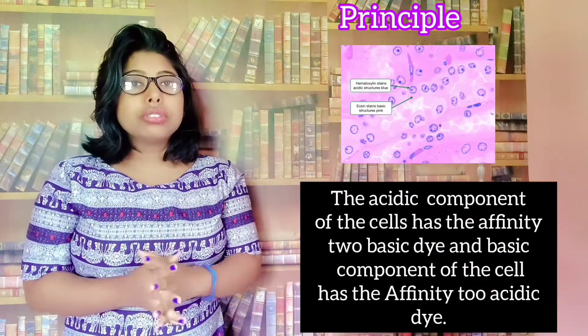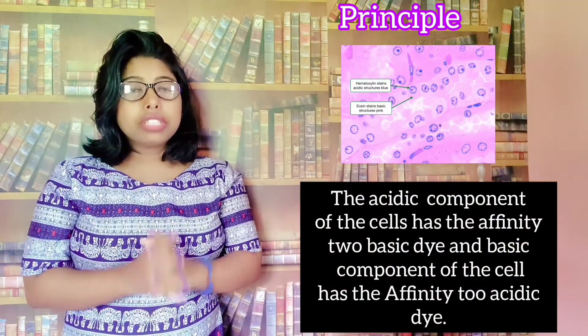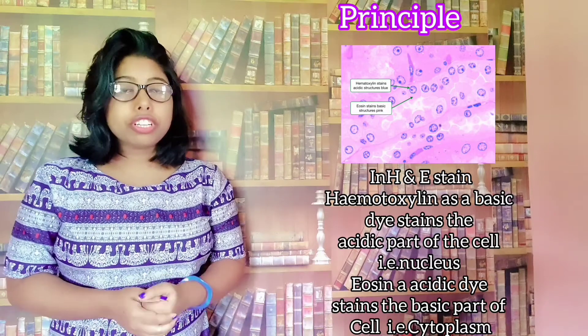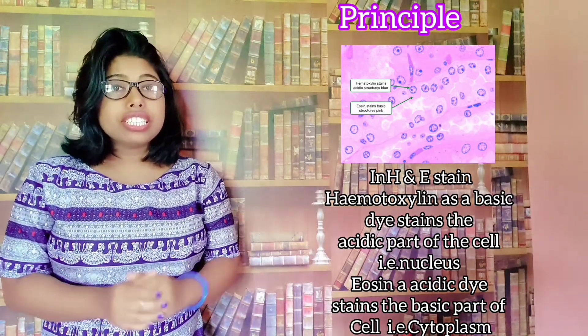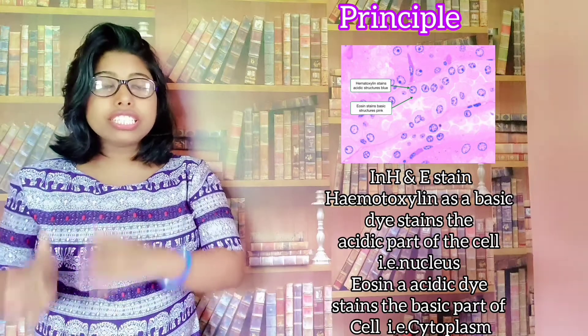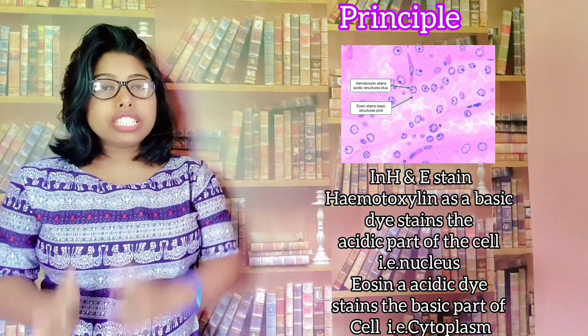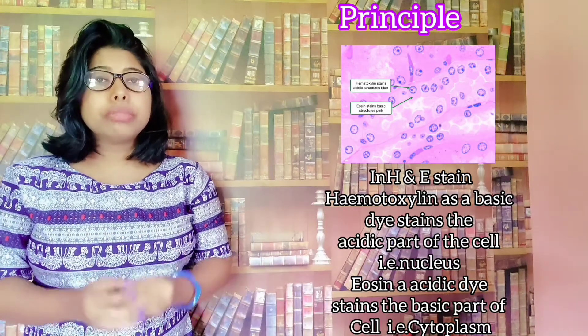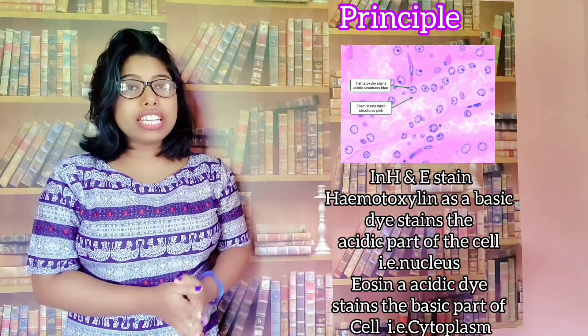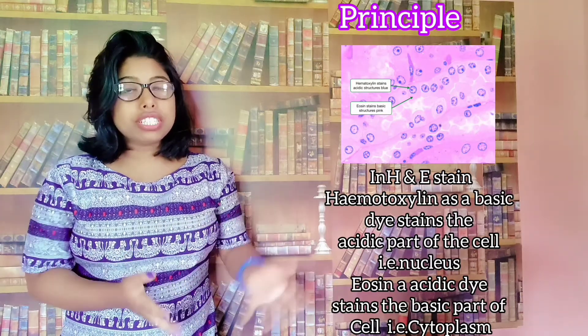The principle of H&E stain is that the acidic part of the cell is more attracted towards the basic or alkaline solution, and vice versa. The acidic part of the cell is attracted towards the basic dye, and the acidic dye is attracted towards the basic part of the cell. This is the overall principle of H&E stain.